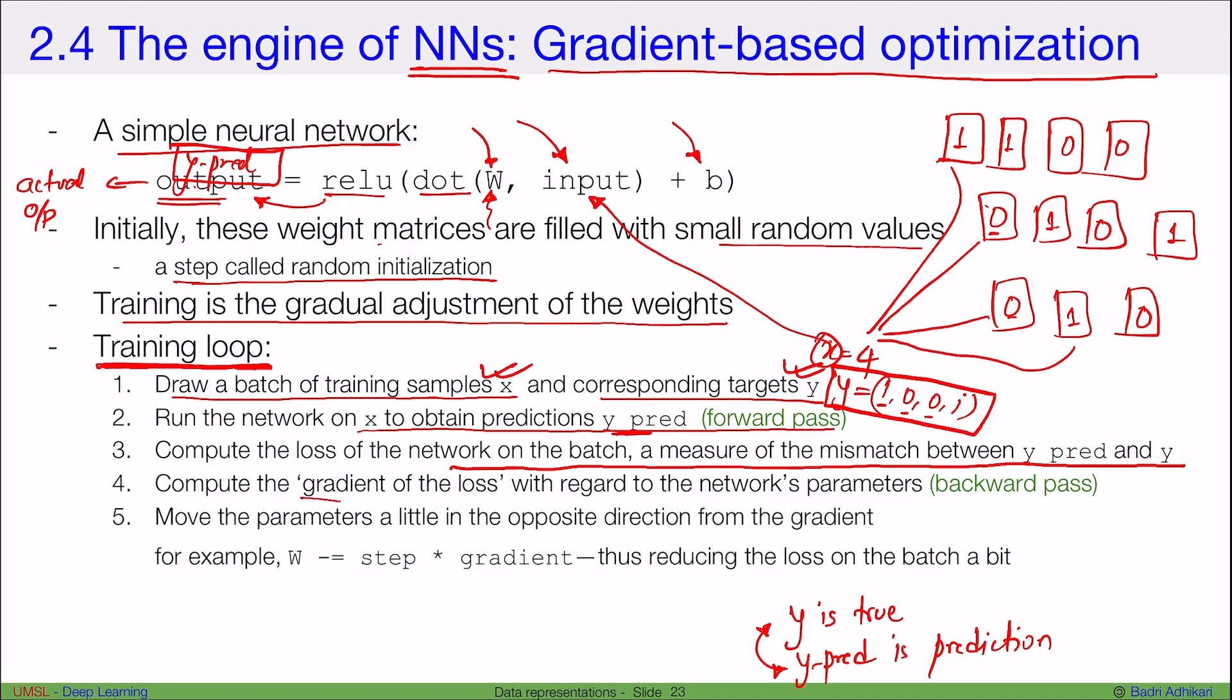Next, we compute the gradient of the loss with regard to the network's parameters, now this is a backward pass. So basically what we want to do is calculate how bad the loss is. When we say gradient of the loss, what we mean is, say this is my loss curve or loss surface, and say this is the loss we got, the gradient tells us how deep to go or how much we should move so that we can eventually get to the minimum loss possible.